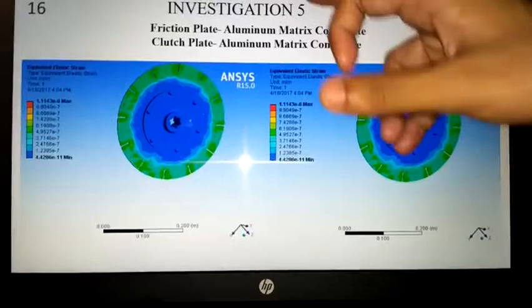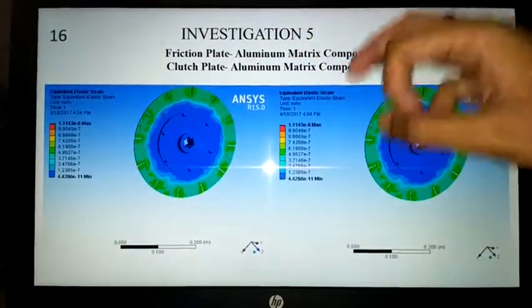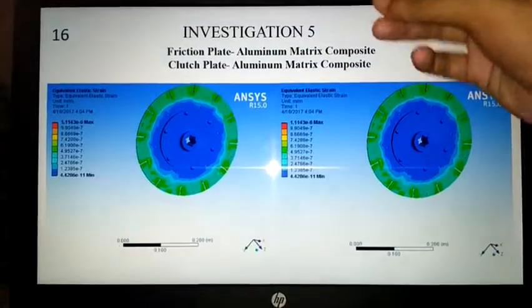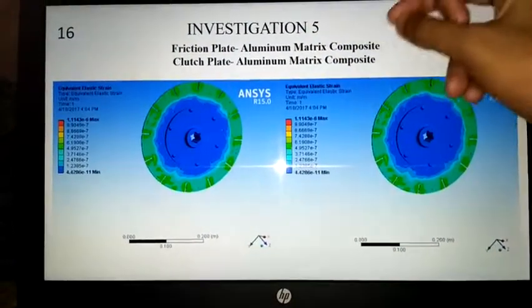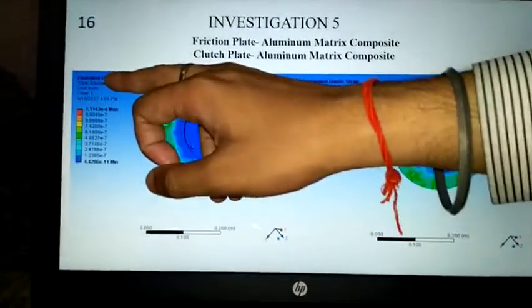Investigation 5: both friction plate and clutch plate use aluminum matrix composite. The results show equivalent strain maximum of 1.13e-6 and strain maximum of 1.43e-6.